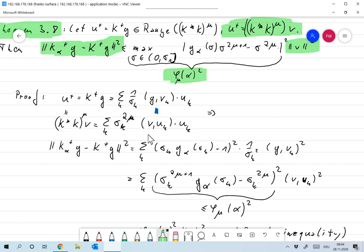we already saw that this is equal to the term over here. So we plug that in, so now we have ⟨V, U_K⟩ squared and that σ_K to the two μ, I put it in here. Then we get the term over here.